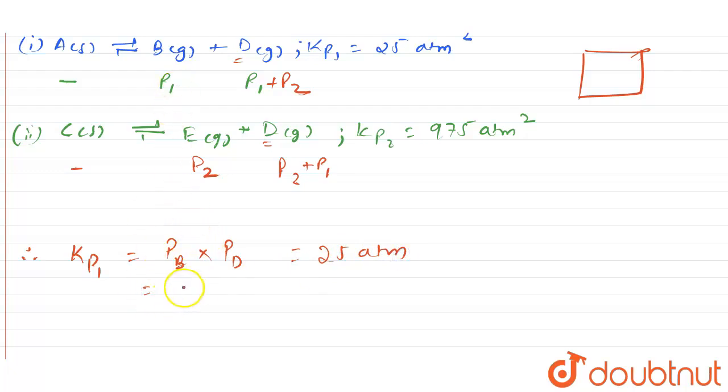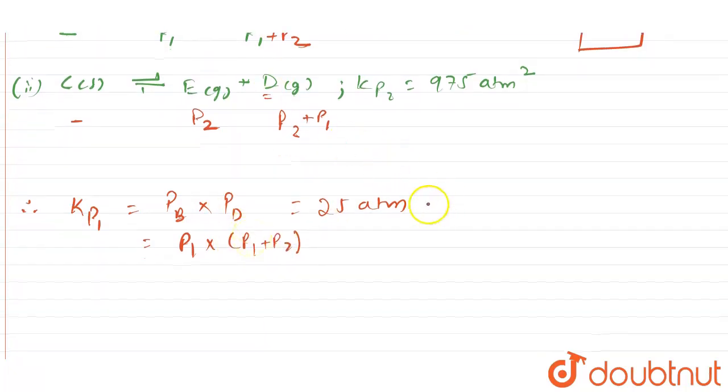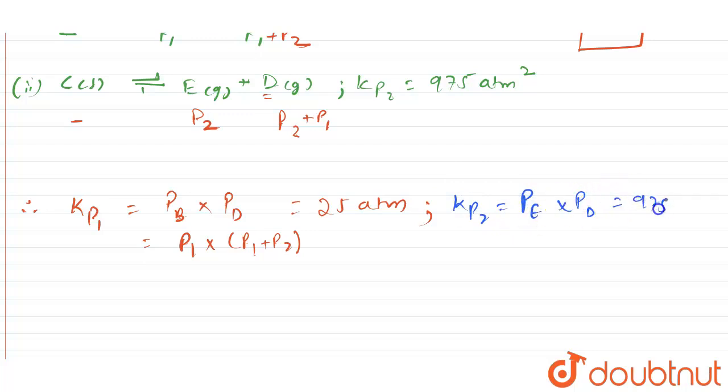So P_B is P1, and P_D is P1 plus P2. Similarly, you can write down the Kp2 value. The Kp2 value will be partial pressure of E multiplied by partial pressure of D, which is equal to 975 atm square. P_E is P2 multiplied by P2 plus P1.